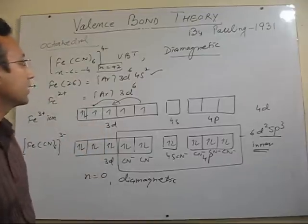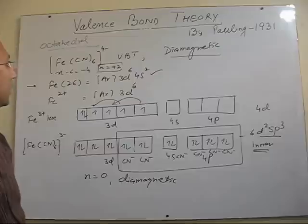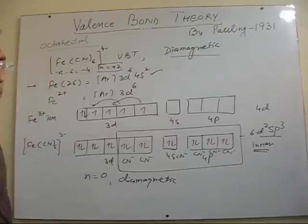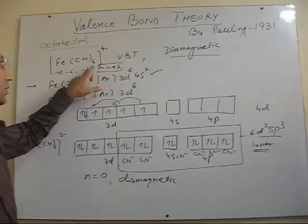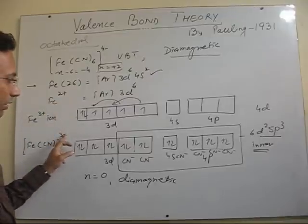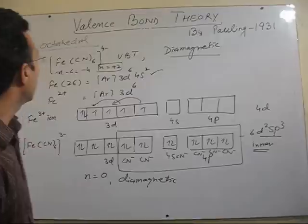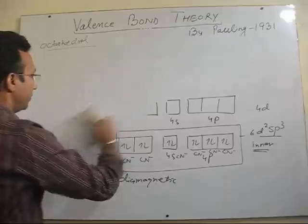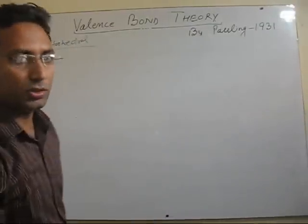By knowing the magnetic behavior only, we can predict how electron pairing will take place. Later, when we study advanced theory like CFT, we will learn that this also depends on the nature of the ligand. In the last two examples, only changing the oxidation state of iron changed the complete magnetic behavior. In both complexes the central metal was iron, the ligand was the same (cyanide), and coordination number was the same — but the oxidation state differed: +3 in the first case and +2 in the second. This is one very important example from an examination point of view.